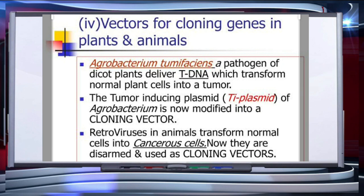The next feature is vectors for cloning genes in plants and animals. In plants, the tumor-inducing plasmid of Agrobacterium tumefaciens is used as a cloning vector. It delivers a piece of DNA known as T-DNA, which transforms normal plant cells into tumor cells to produce chemicals required by the pathogen.